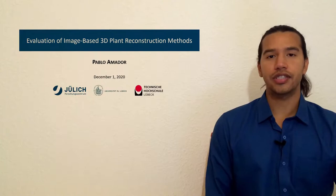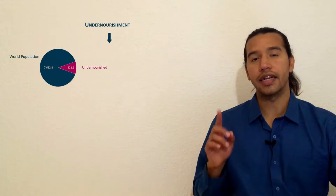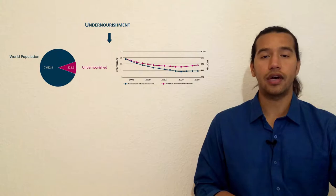But I also address a problem, which is the problem of undernourishment. Right now, in the world, there are more than 820 million people undernourished. That corresponds to one in every nine people, and that trend is sadly increasing since 2015 again.